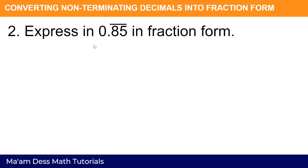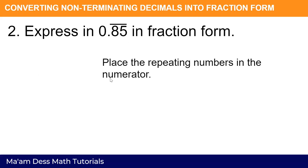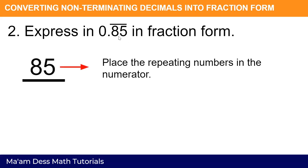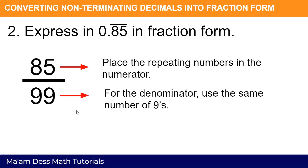For the next example: express 0.85 repeating in fraction form. Place the repeating numbers in the numerator — our numerator is eighty-five. Since there are two decimal places, subtract one from one hundred to get ninety-nine. So 0.85 repeating equals eighty-five over ninety-nine. This is already in simplest form — no need to get the lowest term, as they have no common factors.